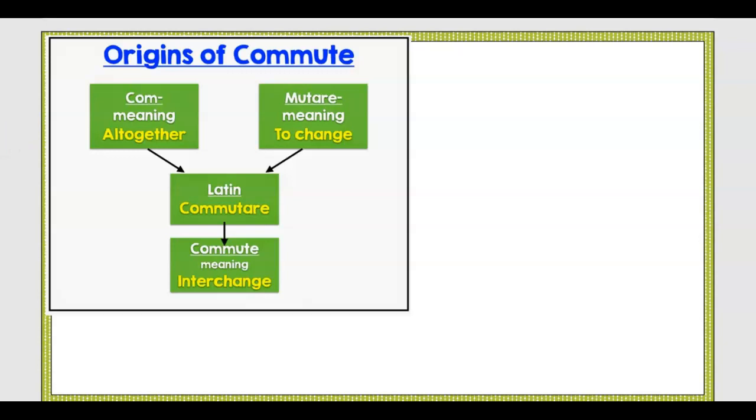So let's talk about the properties. The first property we're going to learn about is commutative property. What does commute mean? You might have a long commute to work or something.